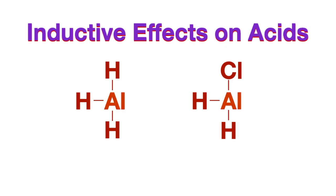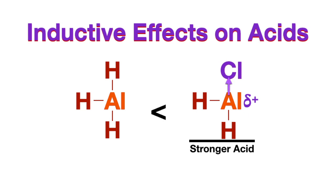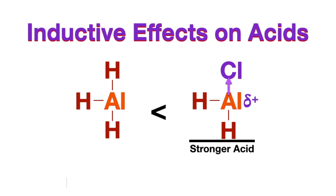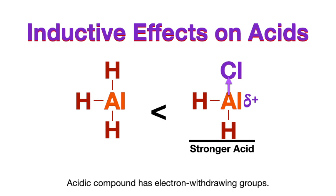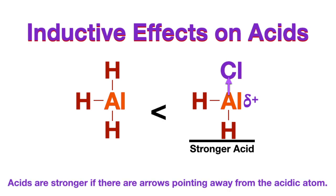Let's compare these two Lewis acids where the aluminum atom in each compound is the acidic atom because it does not have a full octet. In the right-side molecule, there's a chlorine attached to the aluminum, and chlorine is more electronegative than aluminum, which causes electron withdrawing effects — meaning chlorine will pull electrons away from the aluminum toward itself, making that aluminum more partially positively charged. This makes it more attractive to a Lewis base and more likely to accept its lone pair, meaning more acidic — therefore it is the stronger acid. When there are atoms that are more electronegative than the acidic atom in a compound, that causes an electron withdrawing effect away from the acidic atom, making it more positive and more acidic. So the more arrows you have pointing away from the acidic atom, the stronger the acid.